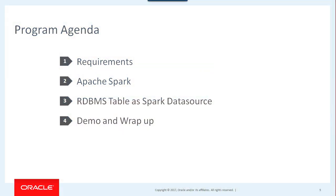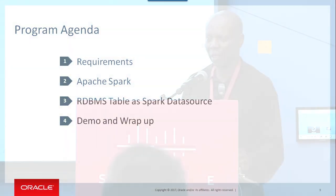This is the agenda. We'll quickly talk about why we're doing this — why do you need to turn relational tables into Spark data sources? Then we'll look at Apache Spark. How many people here are familiar with Spark? Oh, everybody — so I'll skip that part and go quickly. Then we'll go into the substance: how are we turning relational tables into Spark data sources? I'll give you a demo which will explain some of the concepts, and then we'll wrap up.